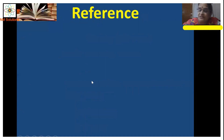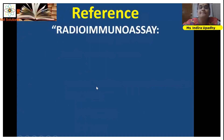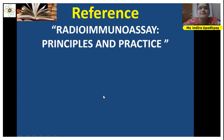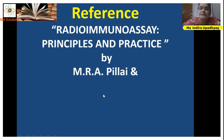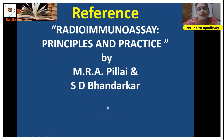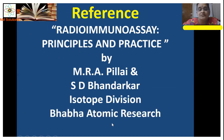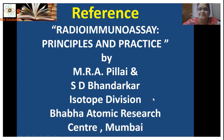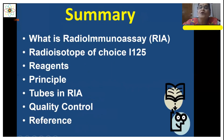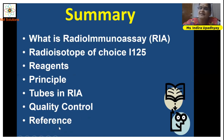The reference used is "Radio Immuno Assay: Principles and Practice" by Dr. M. Rai Pillai and Dr. S.D. Bandarkar from the Isotope Division, BARC — Bhabha Atomic Research Center, Mumbai. In summary, this presentation covered: what is RIA, the radioisotope of choice iodine-125, reagents, principles, tubes in RIA, quality control, and the reference. Thank you.